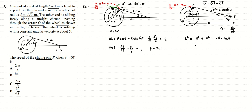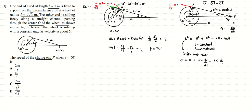Differentiating with respect to time: since L is constant, dL/dt = 0, so d(L²)/dt = 0. R is also constant, so d(R²)/dt = 0. We get 0 = 2x·(dx/dt) − 2R·d/dt(x·cosθ). Both x and θ vary with time, so we apply the product rule to d/dt(x·cosθ).